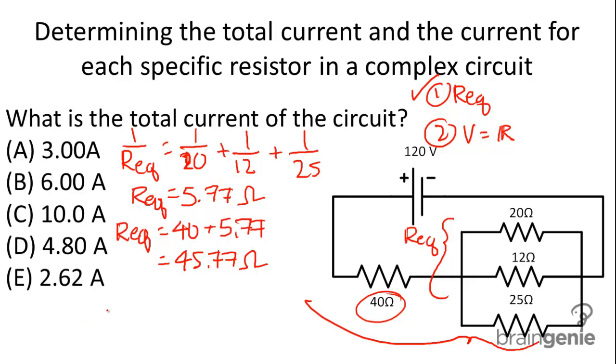We figured that out. Now we're going to use V equals IR to determine I. V equals IR, we know V to be 120, so 120 equals I times 45.77.